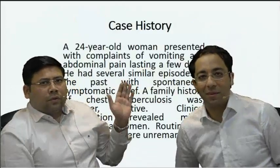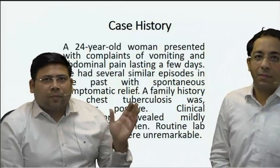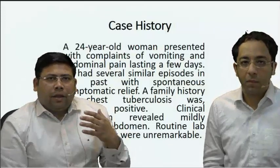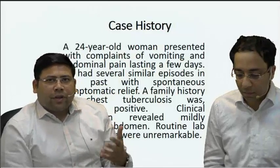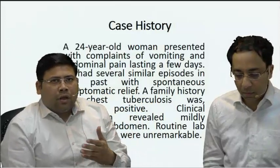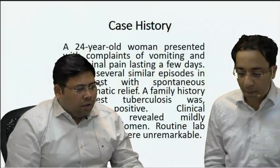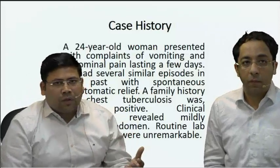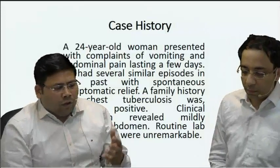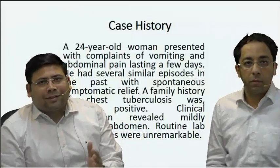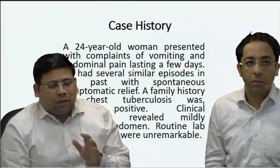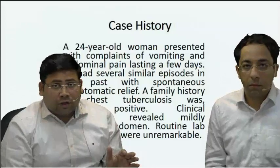This is a 24-year-old female presenting with complaints of subacute intestinal obstruction. She came with complaints of vomiting, intermittent episodes of abdominal distension, and today she is presenting with frank abdominal pain suggestive of intestinal obstruction. The patient has had several such episodes earlier. The family history is suggestive of tuberculosis. Tuberculosis in India is a very common scenario, so this relates to intestinal TB causing intestinal obstruction. The routine laboratory investigations were unremarkable; however, radiology guided us towards the diagnosis.